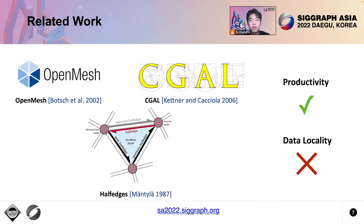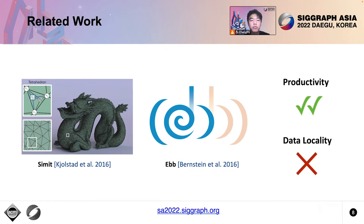Many previous works have tried managing mesh data and accelerating mesh-based operations from different aspects. Some work resorts to mesh data structures and efficient mesh libraries, like half-edges and its stable implementations OpenMesh and CGAL. They provide convenient mesh creation and queries, but do not optimize for data locality. Some previous works resort to compilers and domain-specific languages to overcome portability and productivity problems, like CIMIT and ABB. Their high-level DSL abstractions provide portable and productive programming models, which is one advantage of a mesh-specific compiler. But they do not further exploit data locality to improve performance.